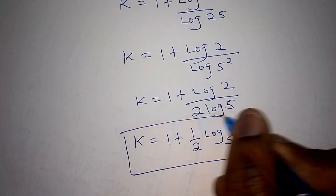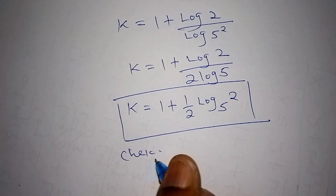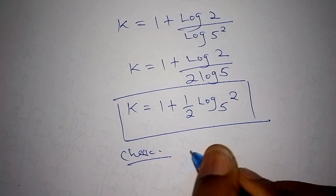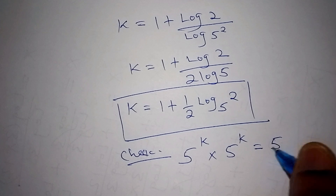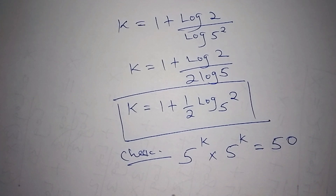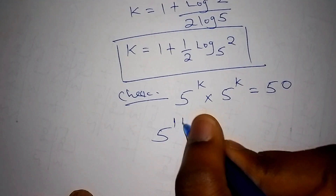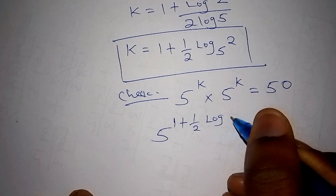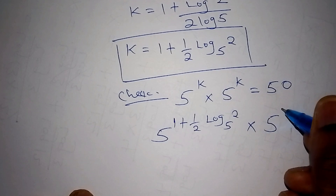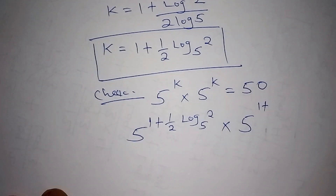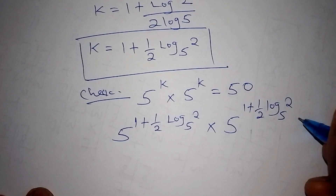This is now the value of k. So now we can check and see if we are indeed right. We have 5 to the power of k multiplied by 5 to the power of k equals 50. Substituting k, we shall have 5 to the power of 1 plus one-half log 2 to the base of 5, multiplied by 5 again to the power of 1 plus one-half log 2 to the base of 5, equals 50.